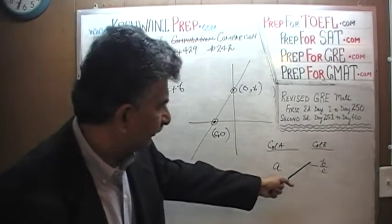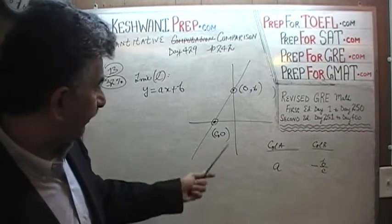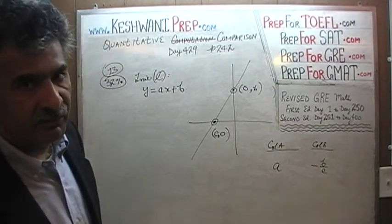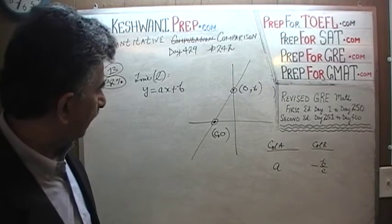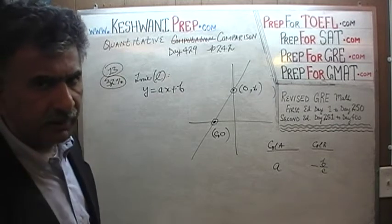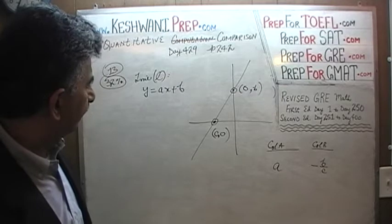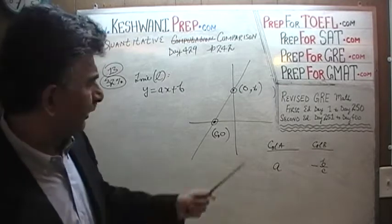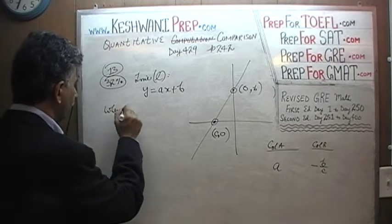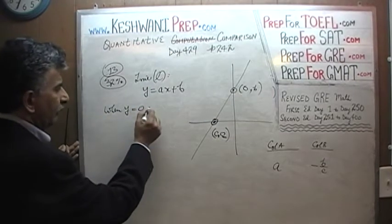We want to compare a versus negative b over c. The simplest way to analyze the line is to look at the points where it cuts the x and y axes — the x-intercept and the y-intercept. We know from the graph that when y equals 0, x equals c.